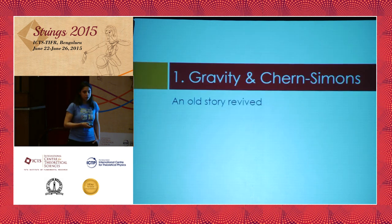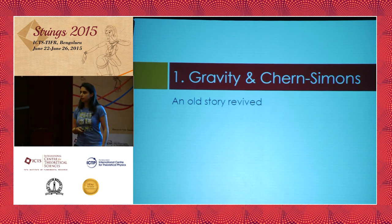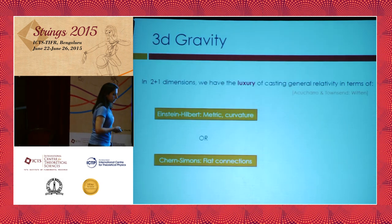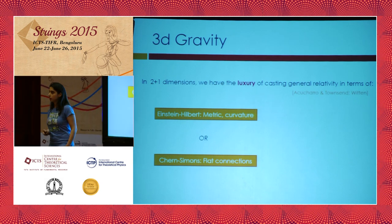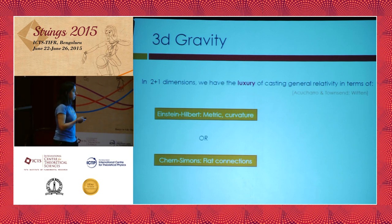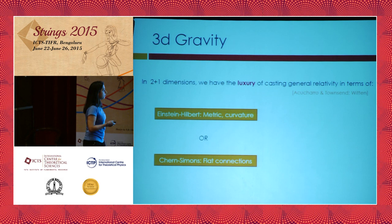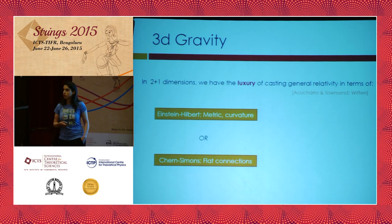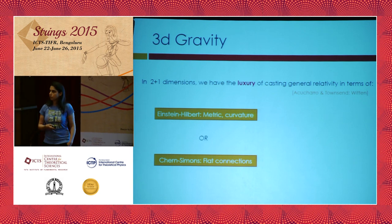First item in our agenda: gravity and its relationship to Chern-Simons theory. This is an old story, but a very good one. In 2+1 dimensions, we have the luxury that we can describe general relativity in two different ways. I can describe general relativity in terms of a metric, use curvatures, and the action principle governed by the Einstein-Hilbert term. Another way is in terms of flat connections, where the action principle is basically a Chern-Simons term. I can choose either of these two descriptions to discuss general relativity.